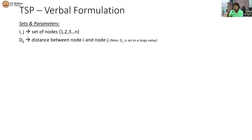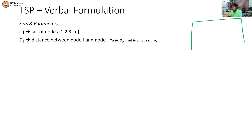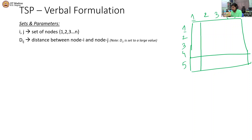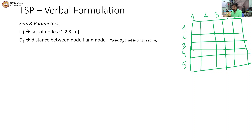Set i and j both represent my nodes, which are 1 through n. Then for every arc i to j, I must know the distance. What is the distance for going from location 1 to location 2, from location 1 to location 3, location 4, location 5? That is d(i,j), and usually this distance is represented as a matrix known as the distance matrix. For a 5-point problem, you would have a 5×5 matrix with 25 cells, and the distance for each pair would be given inside these cells — for example, d(1,2) = 10, d(1,3) = 5, and so on.